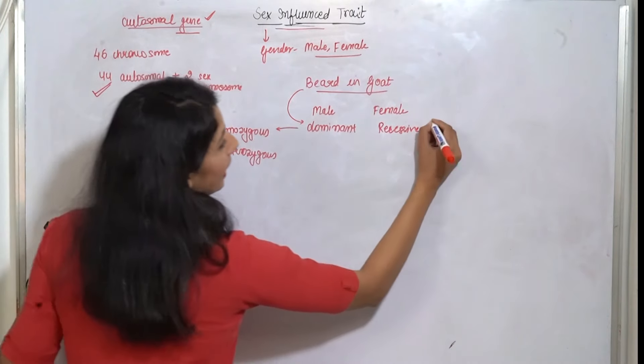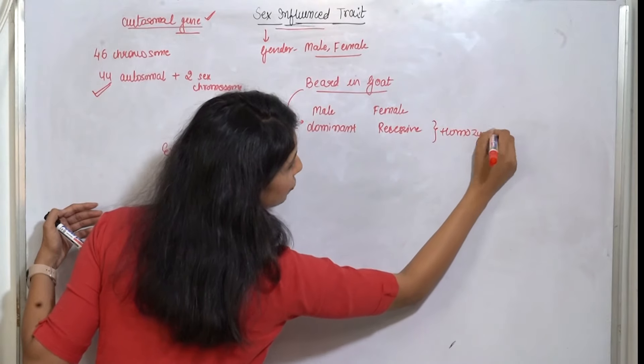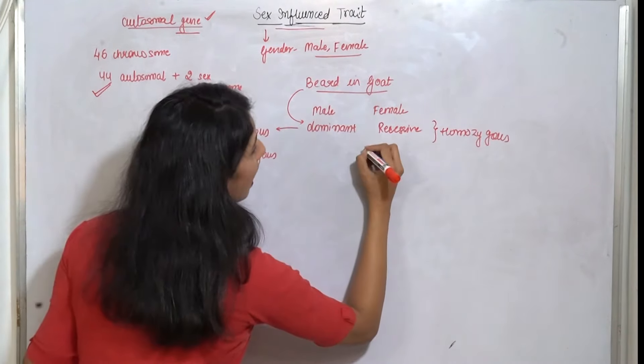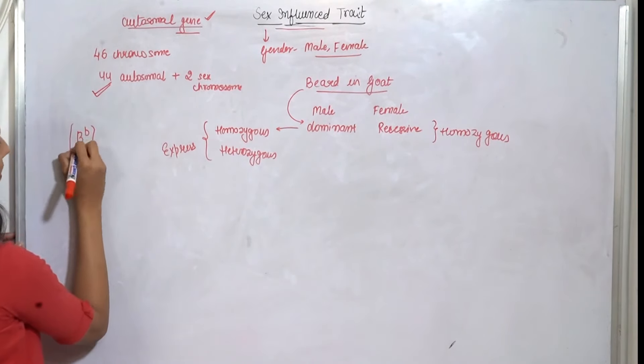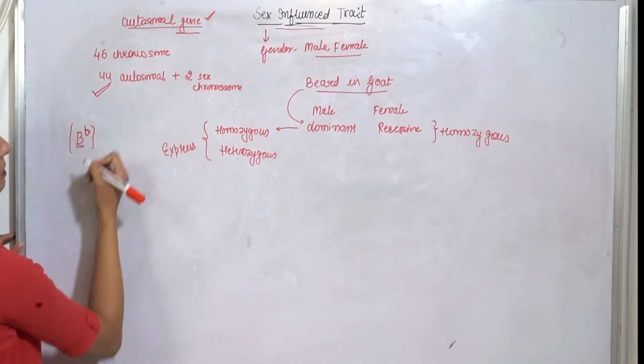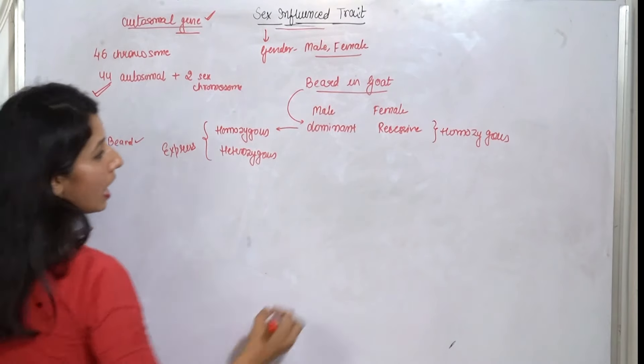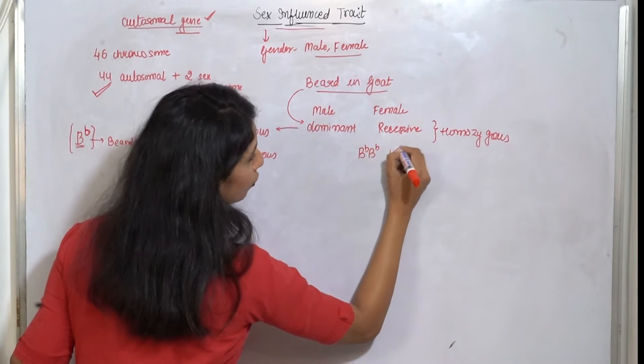But in recessive, only in the homozygous condition in the female case, it will show you the results. Capital B is present, capital B is beard and small b is the allele. If it is present, then you will have a beard.